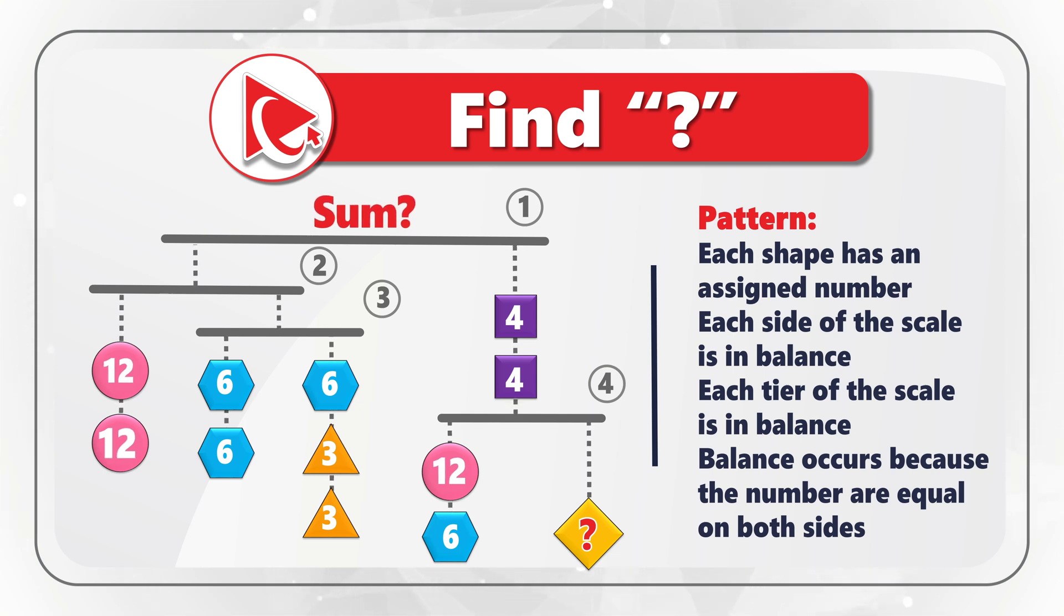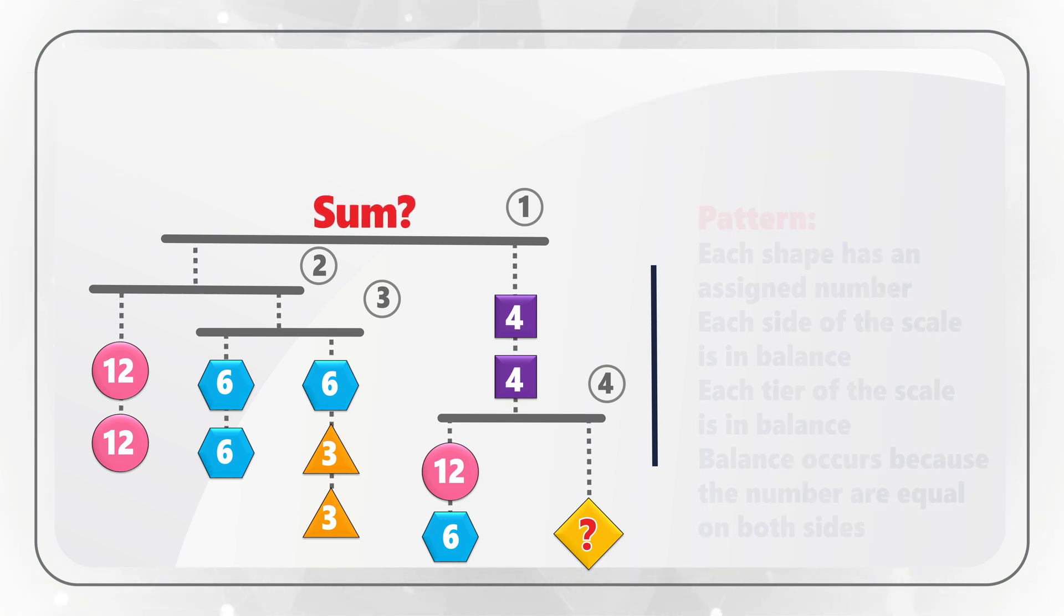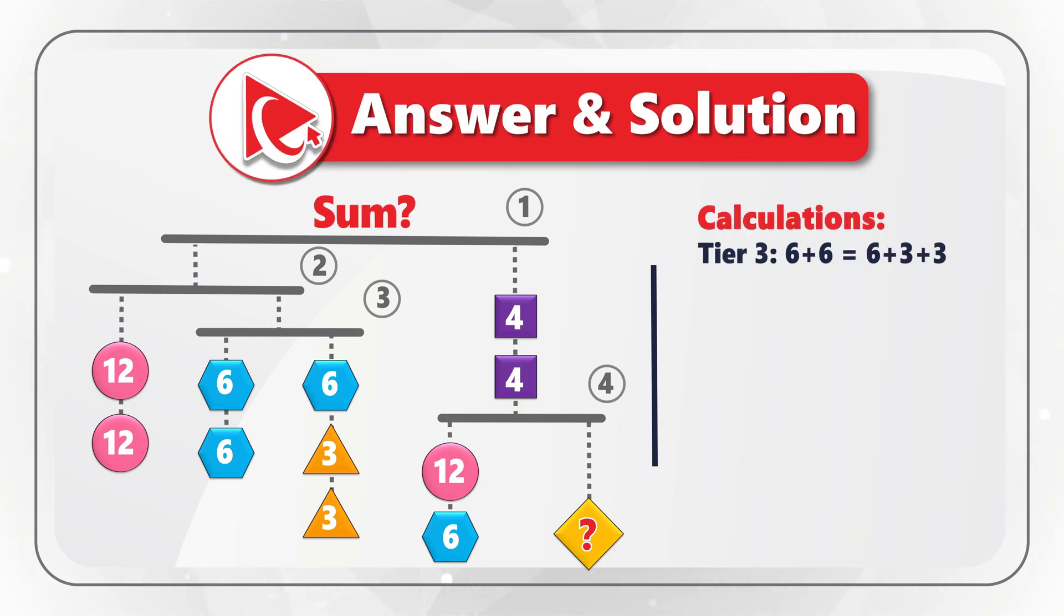For example, circle has number 12, hexagon has number 6, triangle has number 3, and square has number 4. Let's look closely at tier 3 to better understand how this tier remains in balance. As I already mentioned, each tier remains in balance because the numbers are equal on both sides.